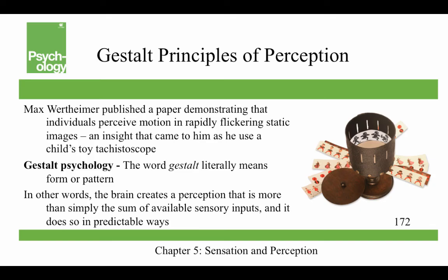Let's finish up by talking about Gestalt principles of perception. This starts with Max Wertheimer, who published a paper demonstrating that individuals perceive motion in rapidly flickering static images — the motion is not in the stimuli but in our perception of it, known as the phi phenomenon. This insight came to him through a child's toy called a tachystoscope. Gestalt literally means form or pattern, and the idea is that the brain creates a perception that is more than simply the sum of the available sensory inputs, and it does so in predictable ways.